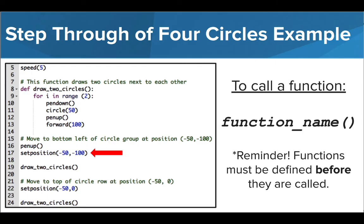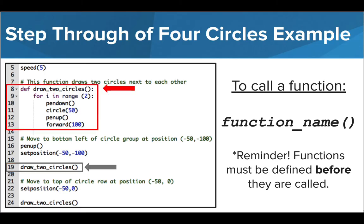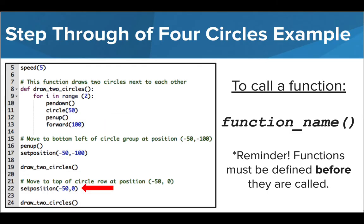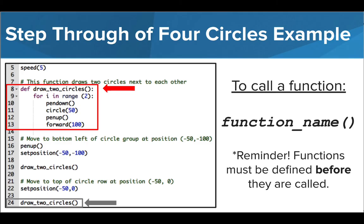Next, Tracy will set her position and then the draw_two_circles function will be called. To complete this command, Tracy looks through the previous code to see if this function has been defined. She finds the definition on line 8, so she then follows these commands in order. After the function commands have been completed, Tracy continues where she left off and sets the new position. And then the draw_two_circles function will be called again. To complete this command, Tracy looks through the previous code to find the definition, and then follows the commands in order.